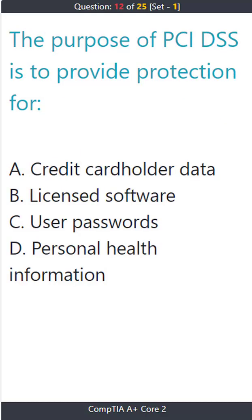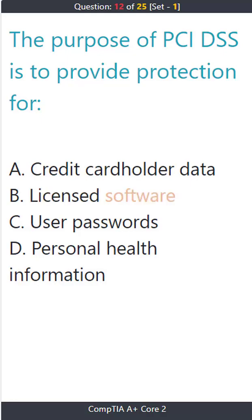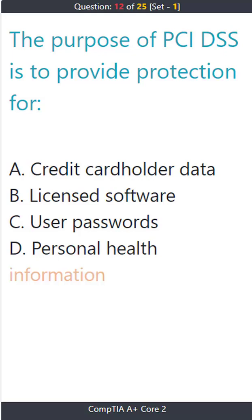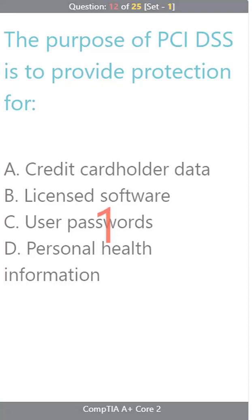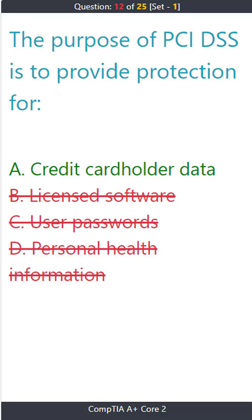Question 12: The purpose of PCI DSS is to provide protection for: A) credit card holder data. B) licensed software. C) user passwords. D) personal health information. The correct answer is A: credit card holder data.